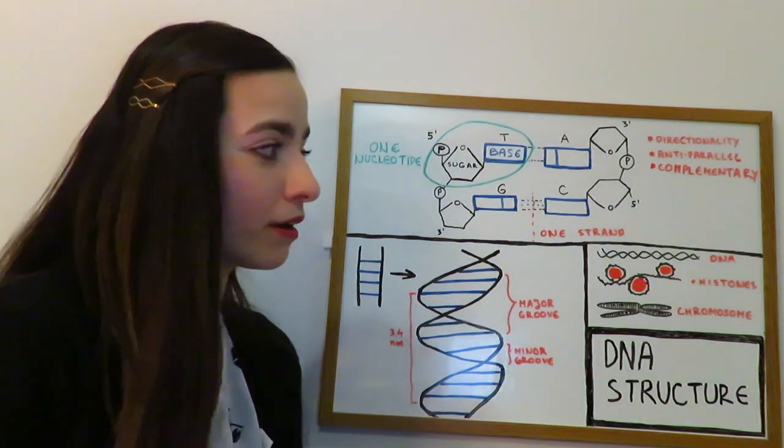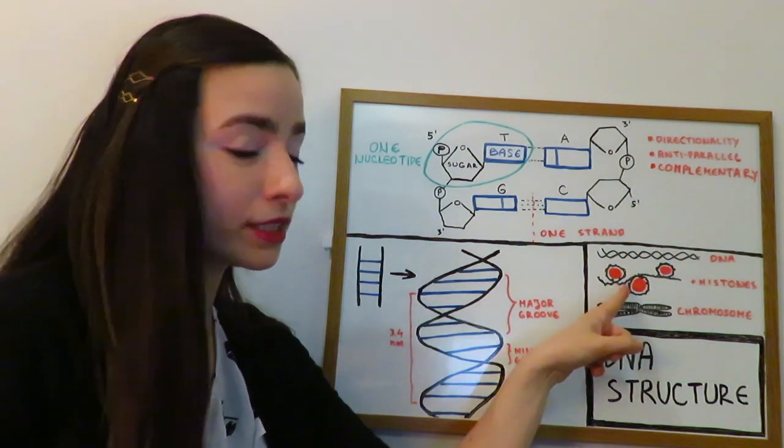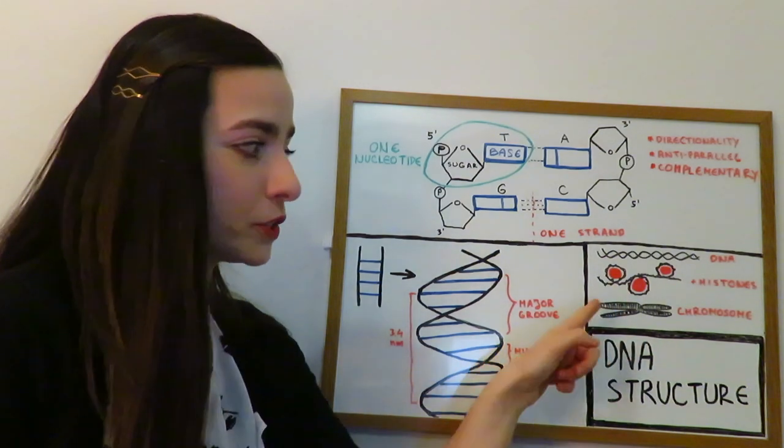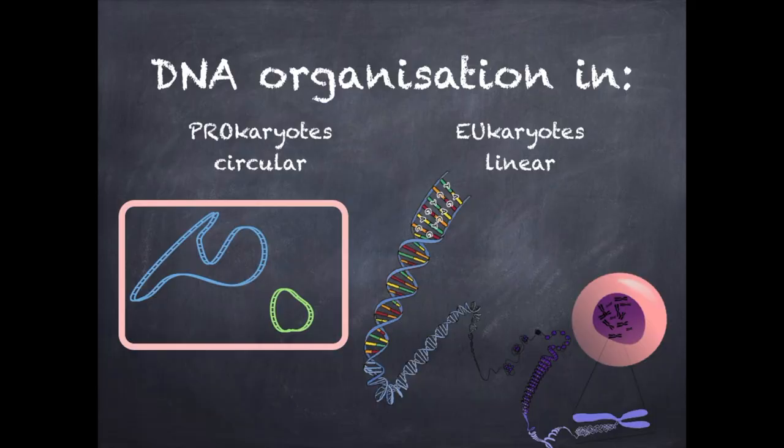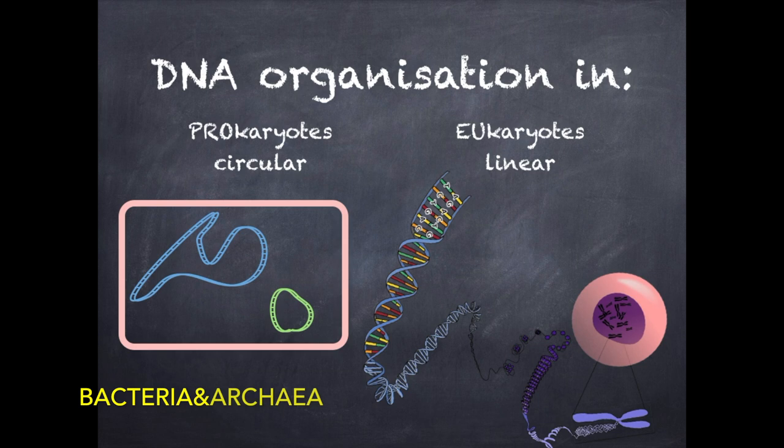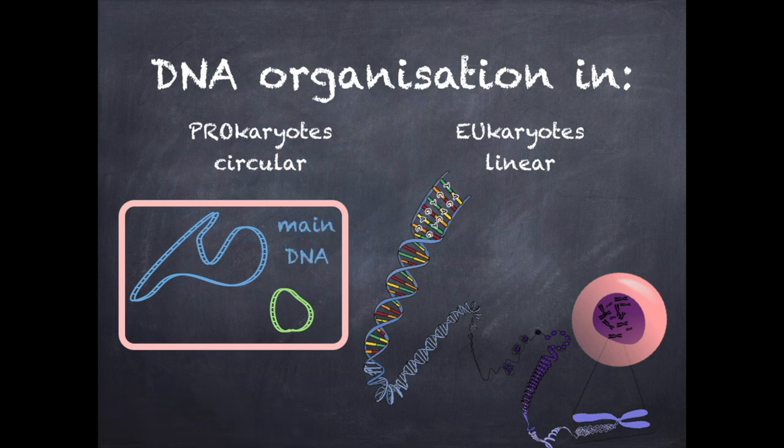For example, in eukaryotes it binds to the histone proteins, which are then organized on higher level to chromosomes. In prokaryotes, such as bacteria and archaea, which do not have a nucleus, the DNA is found only in the cytoplasm as one circular chromosome and may also sometimes have smaller DNA molecules called plasmids.